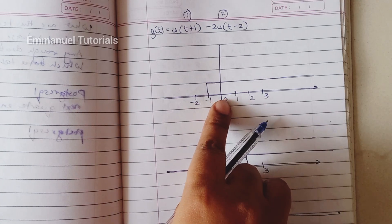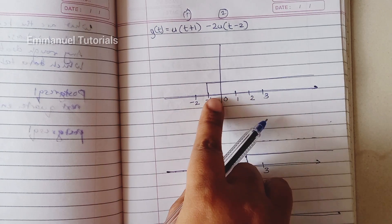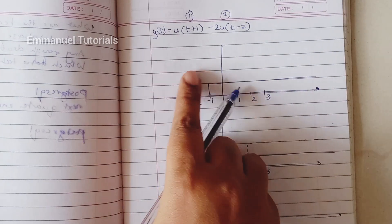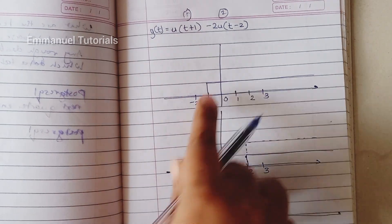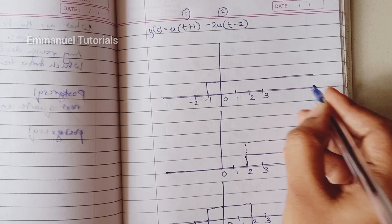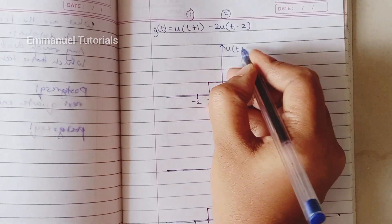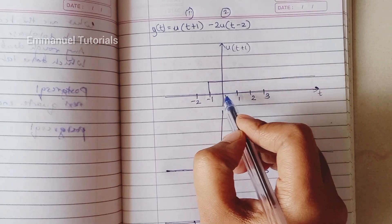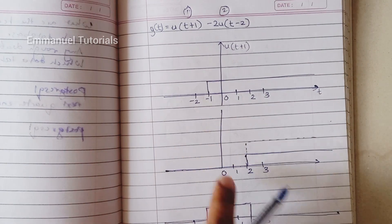So for the first one I have drawn the signal already. It's just the unit step signal which we have advanced by one point on the time axis. So this is u of t plus 1. u of t is the same step signal which will start from 0, we have just advanced it.